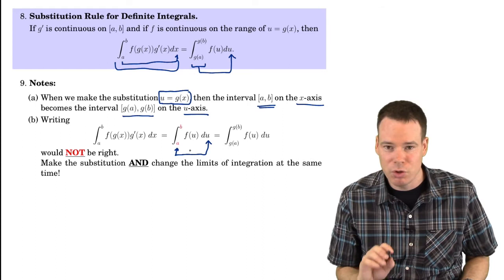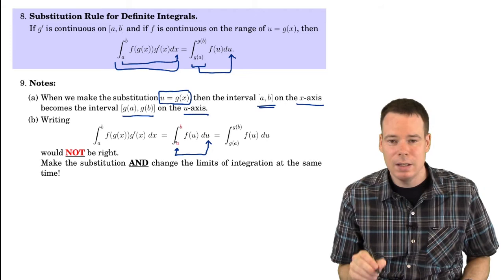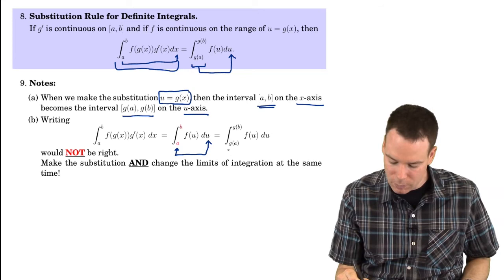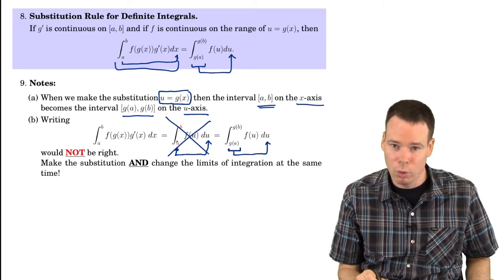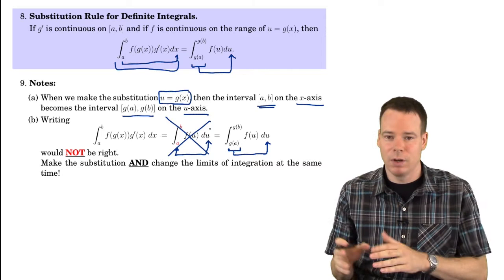But in this case, they're not. Those are the original x values. Those limits of integration need to be values of the new variable u. So you have to change both the limits of integration and your variable of integration simultaneously. So make sure you do not write this step where you keep your old limit of integration, but your new variable. Don't do that. Change both the limits and the variable simultaneously.